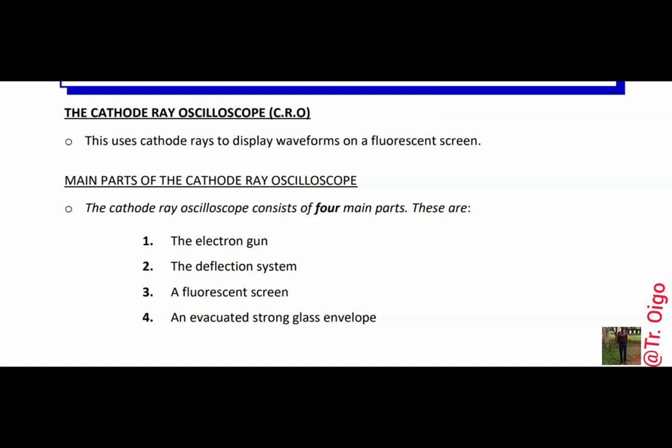Today I want to go through a short discussion on the cathode ray oscilloscope, that is the CRO. This CRO uses cathode rays to display waveforms on a fluorescent screen. The cathode ray oscilloscope has four main parts: the electron gun, the deflection system, the fluorescent screen, and the evacuated strong glass envelope.